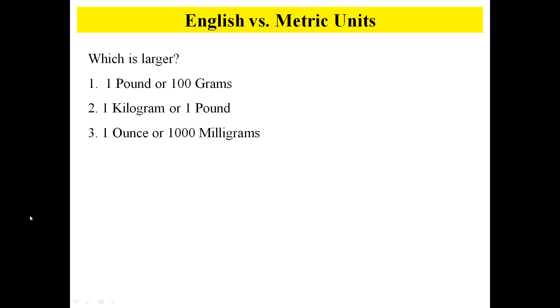One pound or 100 grams. One pound is actually much bigger. One pound is 454 grams if you want to round it up.